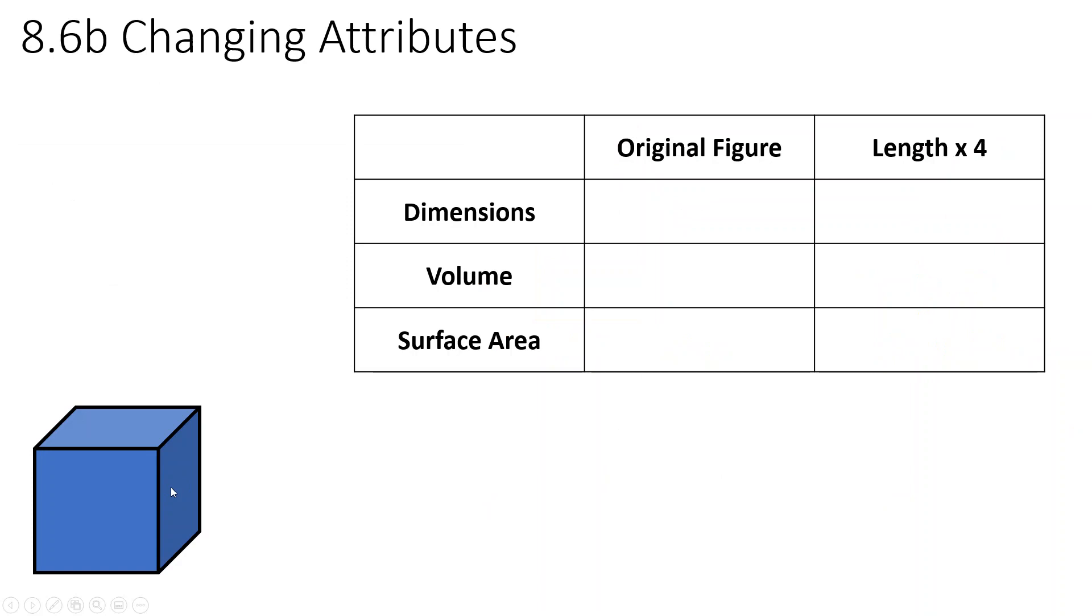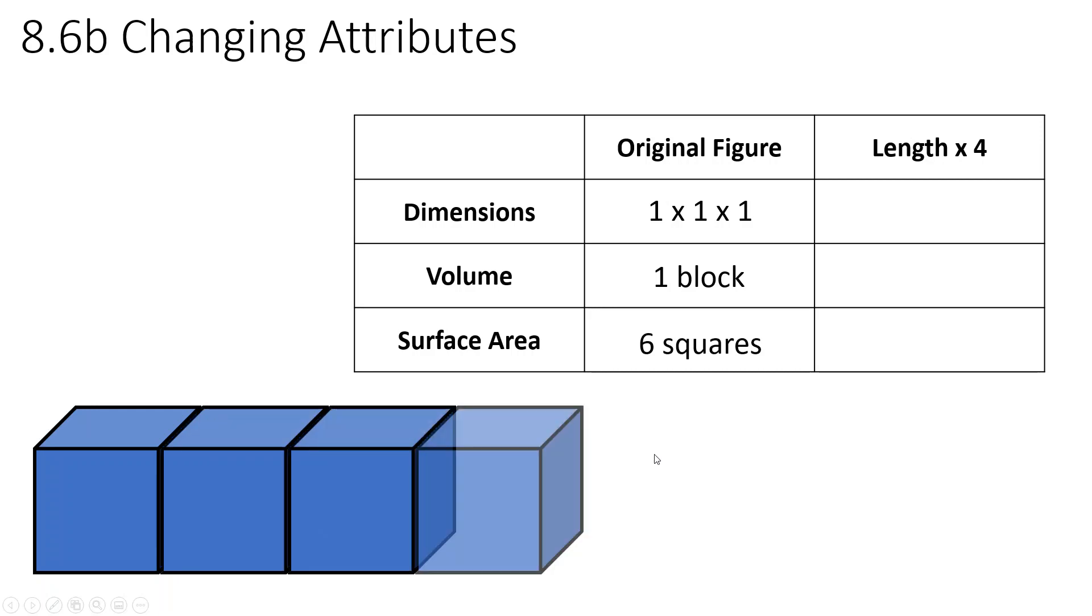We have our original figure that's 1 by 1 by 1. Its volume is 1 cube. And its surface area, well, I see 3 squares. So that's 3 squares I see. But there's also 3 that I don't. It's a total of 6 square faces. So that's the surface area. To figure out what happens when we multiply our length by 4, well, let's go ahead and do that. My length was 1. Now my length is 4. So you can think of it as 4 by 1 by 1. It doesn't really matter what order you have the dimensions. Your volume was 1 block. Now my volume is 4 blocks.